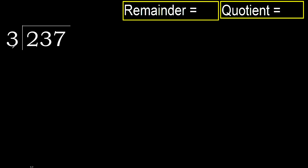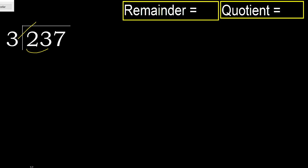237 divided by 3. 2 is less than 3, therefore move to the next digit. 23 is not less than 3, so with 23, we find which number 3 multiplied by is nearest to 23.